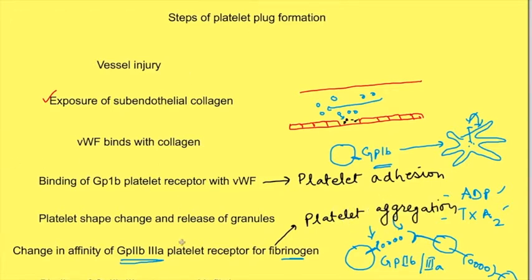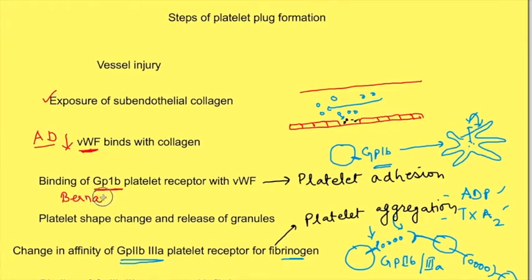Understanding this process helps explain certain diseases. A decrease in von Willebrand factor occurs in an inherited autosomal dominant disease. There is another rare disease in which there is an abnormal GP1B receptor, known as Bernard-Soulier syndrome, in which platelet adhesion cannot occur. In this disease, the number of platelets is normal, but there is a problem in platelet plug formation.